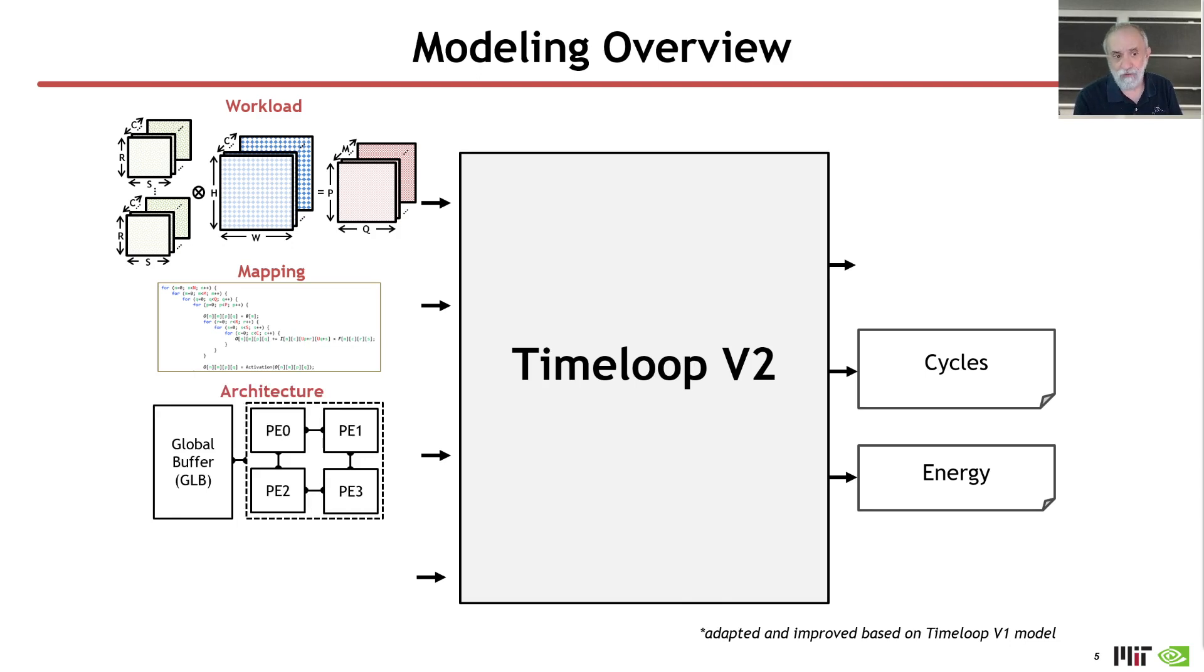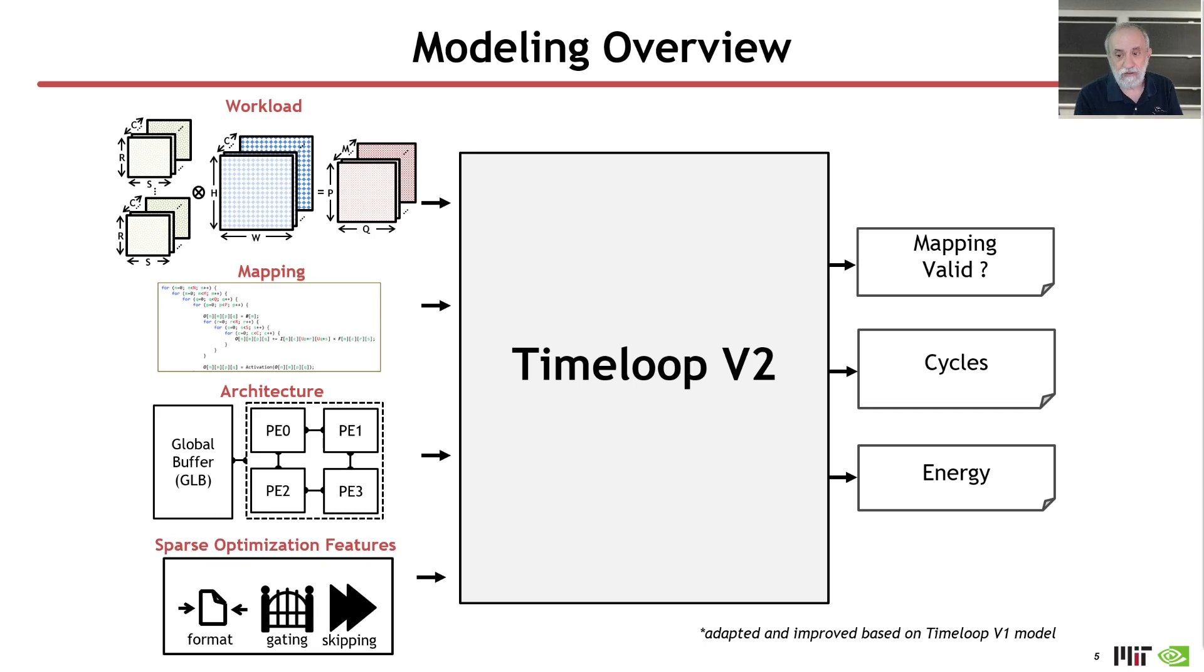We then have to actually talk about the specific design of the accelerator. How does data flow in it? What are the network connections? And what that is going to allow us to do is decide whether actually the mapping is legal, because the mapping is going to say this is the order of computations that we want to do and this is where we want to do them. The architecture has got to be able to support that. So another output of the tool is whether the mapping is valid. And in this tutorial, what we're going to do is we're going to look at specific details of the optimizations in an accelerator architecture that are going to be used to exploit sparsity. So we're going to talk about how to specify those attributes.